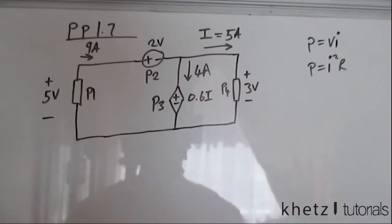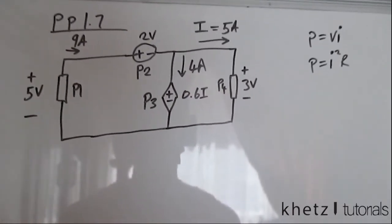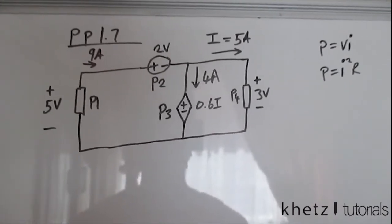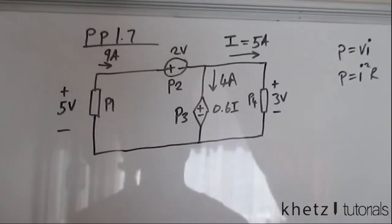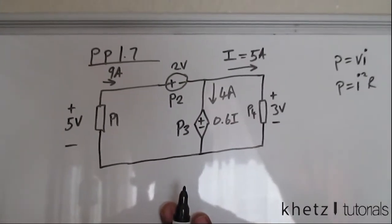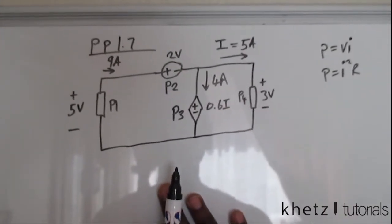Welcome to CATS Tutorials and in this video we are going to be covering practice problem 1.7. The question says, compute the power absorbed or supplied by each component in the circuit.